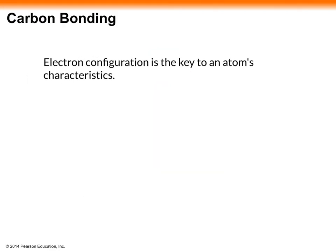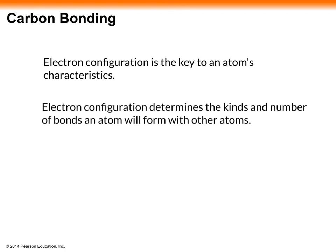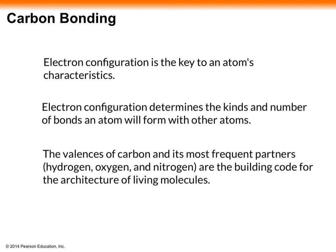In Chapter 2, we talked a lot about chemistry and electrons. Remember that electrons are responsible for forming bonds and participating in chemical reactions, so the electron configuration is key to an atom's characteristics and what type of bonds it can form. For carbon specifically, the valence electrons in its outer shell, and its most frequent partners — hydrogen, oxygen, and nitrogen — are the building code for the architecture of living molecules.